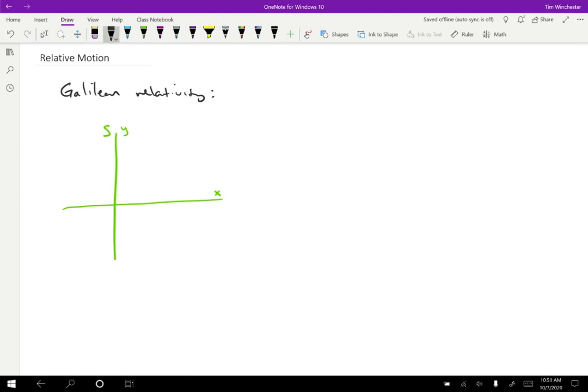In that coordinate system, I want to find the position of some point. I'm going to call the position of that object R_0,S. So the 0 indicates that it's the position of the object, S tells me the coordinate system. Position of object relative to frame S.